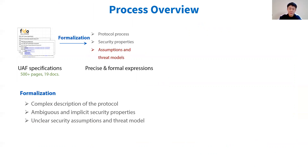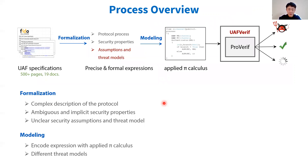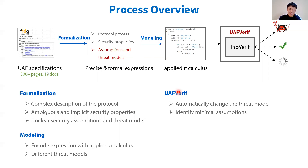To overcome these challenges, we formalize the protocol process and security properties of the specifications into precise expressions, and present threat models that cover different scenarios. We model them into applied pi calculus, the programming language of the ProVerif tool. The protocol process and threat models can be modeled into a process, and the desired goals can be modeled into query statements. ProVerif can automatically analyze if the protocol satisfies a security goal. When we find an attack, we modify assumptions to represent other scenarios and analyze if the protocol meets a security goal again. We developed a tool, UAFVerif, which can automatically change the threat model and identify the minimal assumptions.